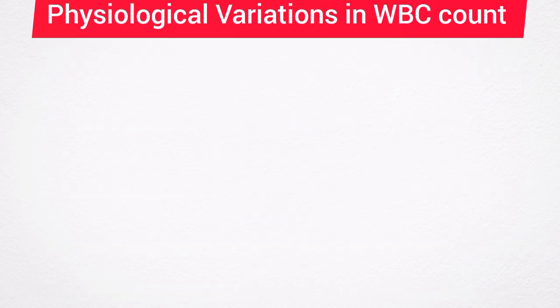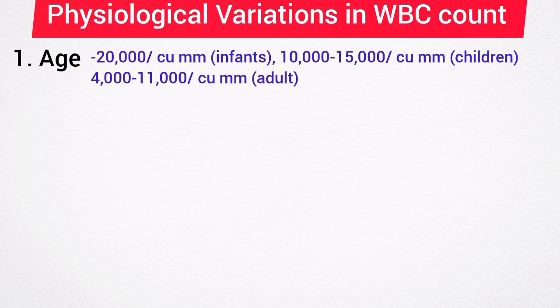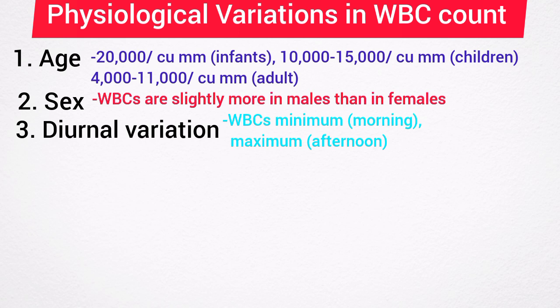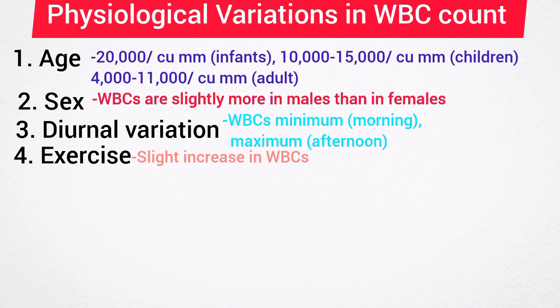Physiological variations in white blood cell count include: age — WBC count is about 20,000 per cubic millimeter in infants, 10,000 to 15,000 in children, and 4,000 to 11,000 in adults. Sex — white blood cells are slightly more in males than females. Diurnal variation — WBC count is minimum in the early hours of the day and maximum in the afternoon. Exercise causes a slight increase in WBC count. Sleep decreases WBC count.